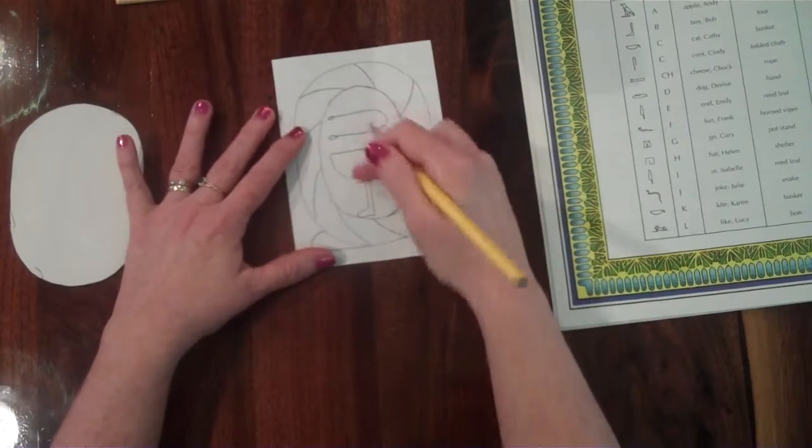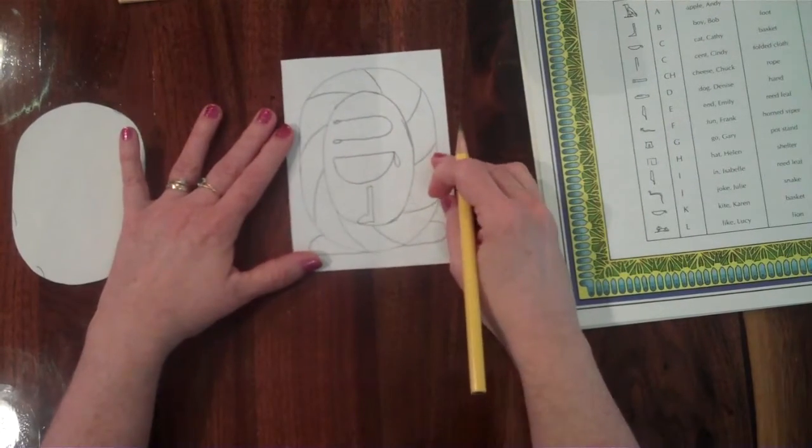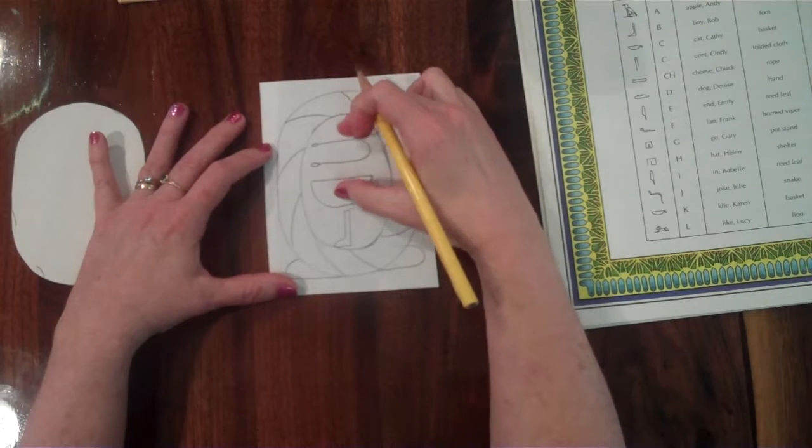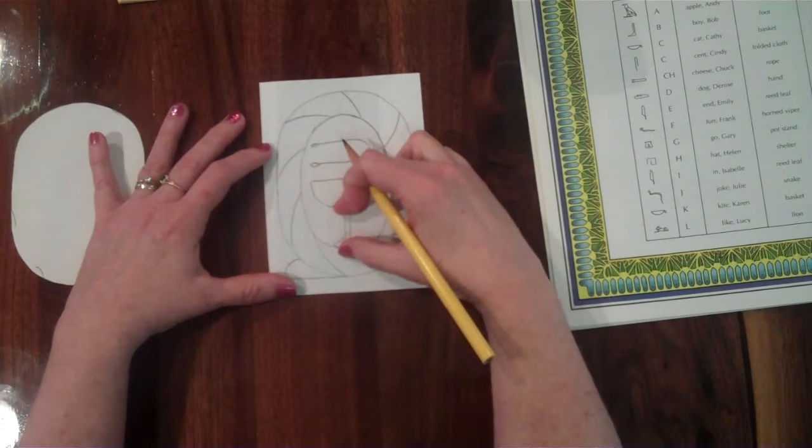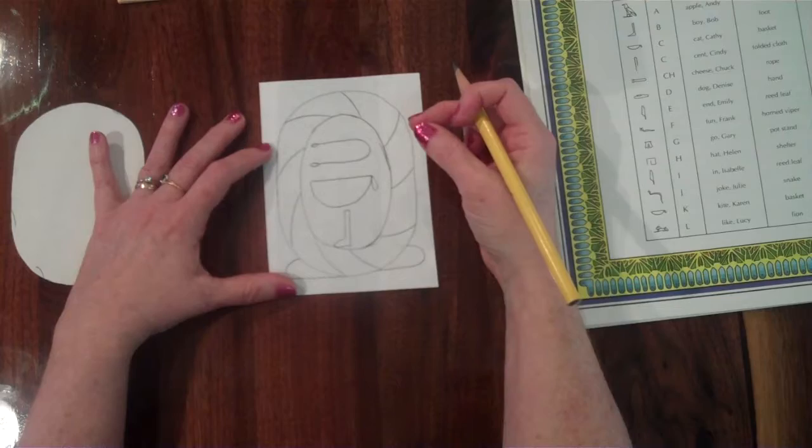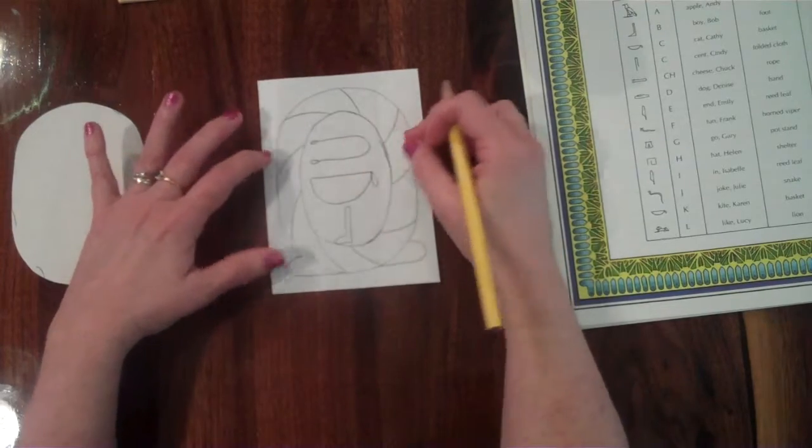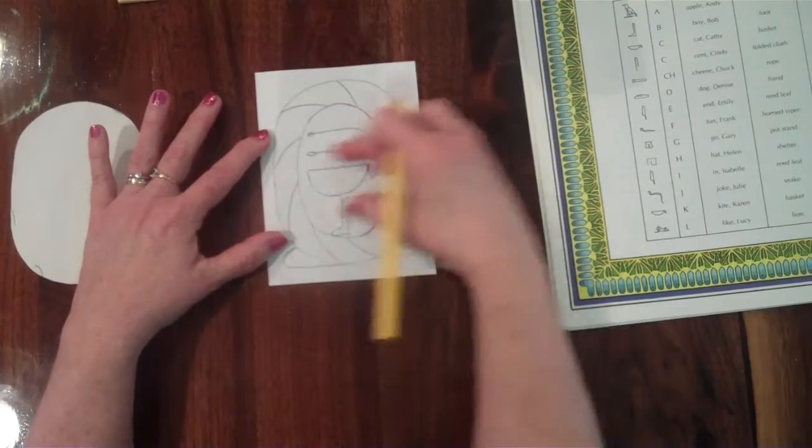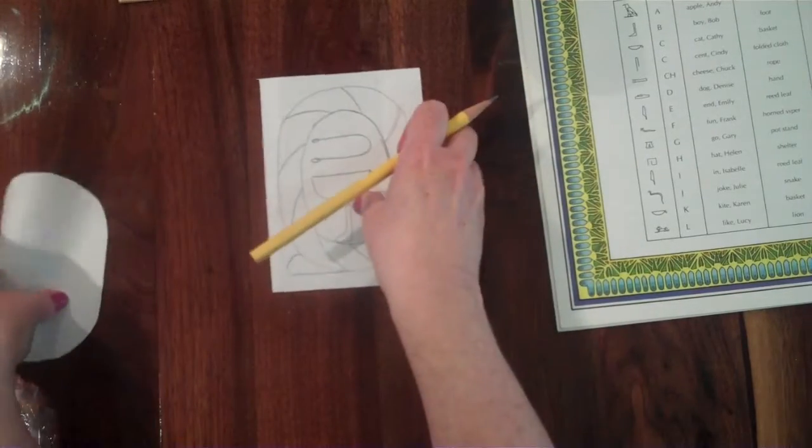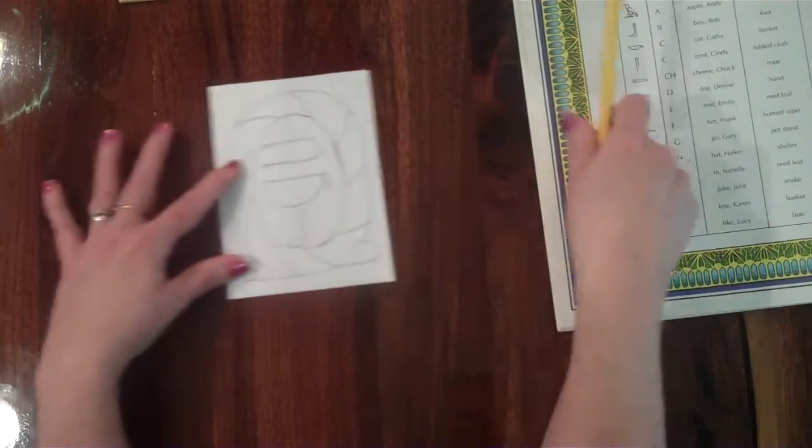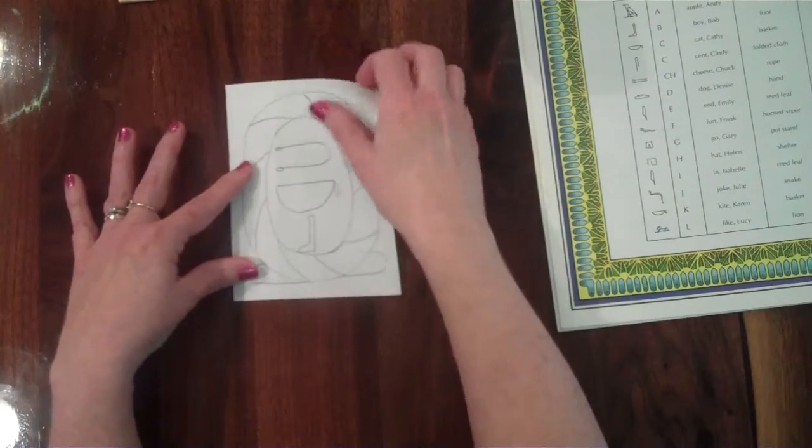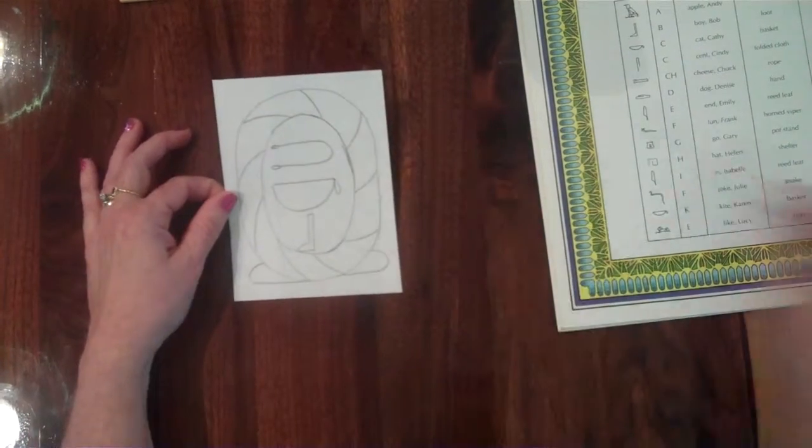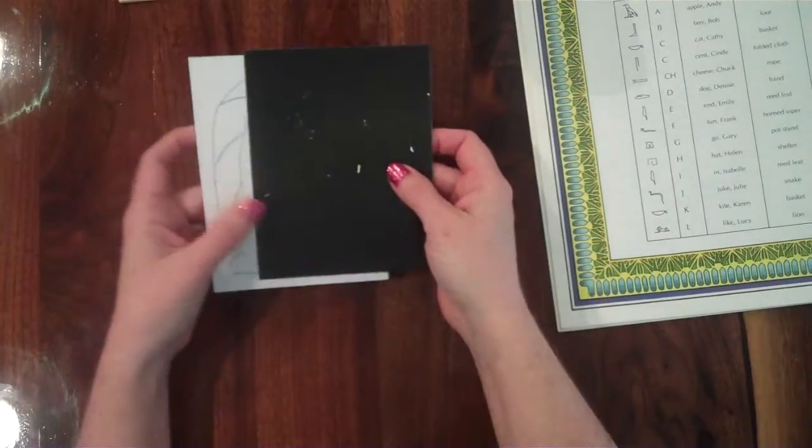You want to space them out nicely so you don't have your hieroglyphs really tiny at the top and then have nothing at the bottom. You also don't want them to be all squashed to one side or the other, so you want to try to center them as much as possible. And the next thing you're going to do, once you have that drawn, is transfer it over to your scratch board.